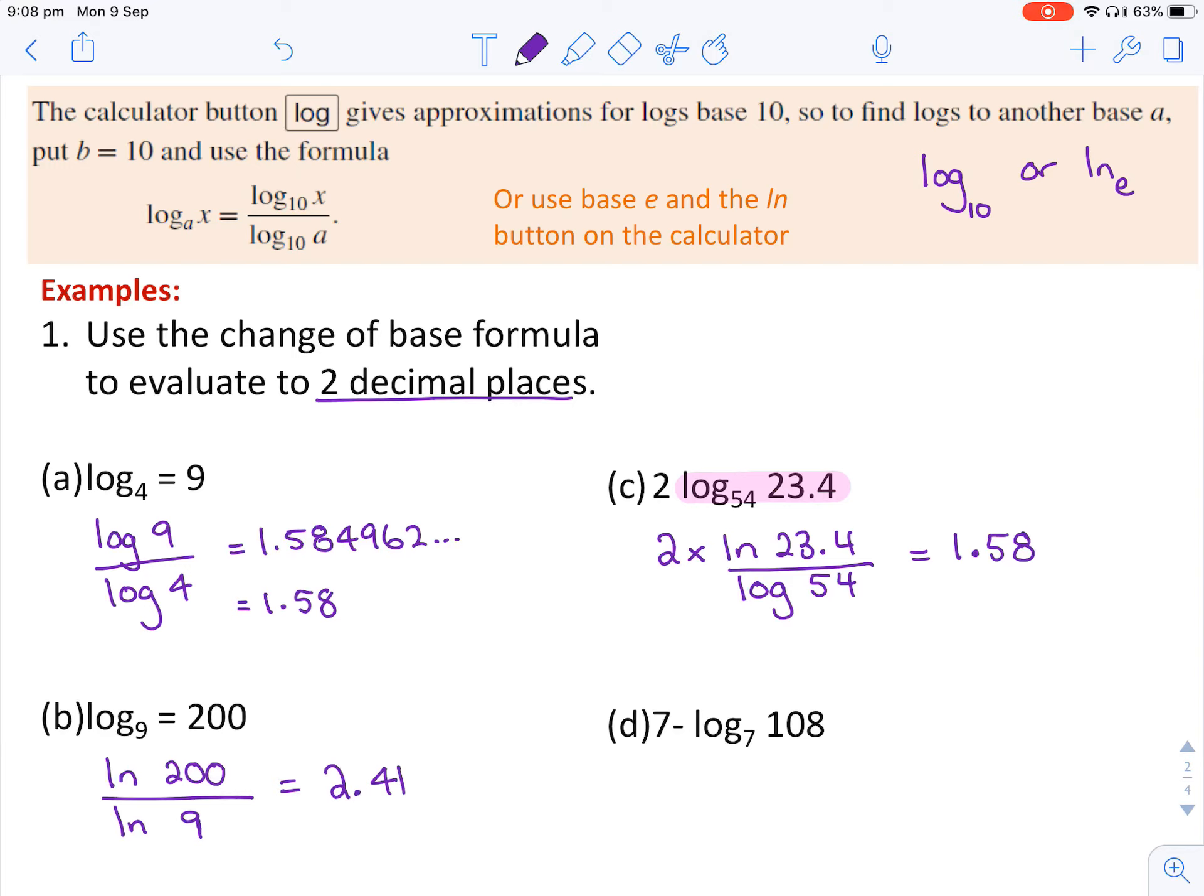Likewise, for part d, we're applying the log change of base law just to the log component. So that seven and the minus stays as they are for the time being, and rewriting this as log of 108 divided by log of seven. Again, straightforward calculator work should give you 4.59.